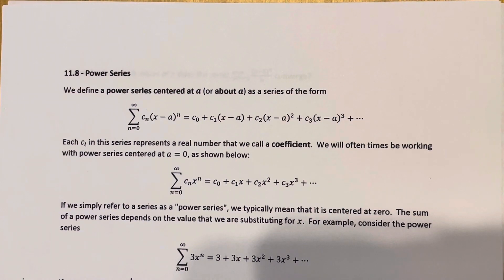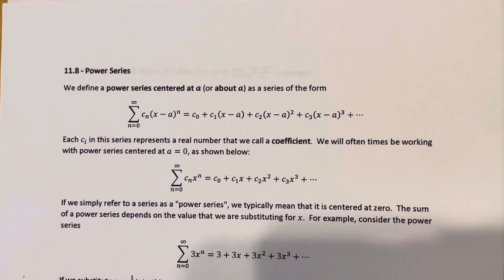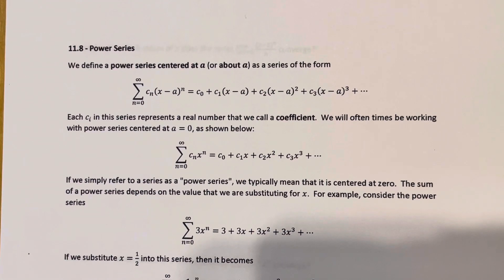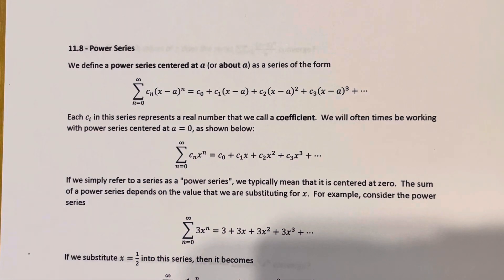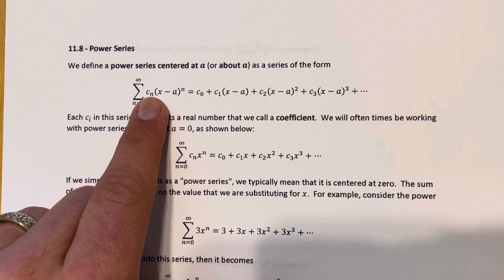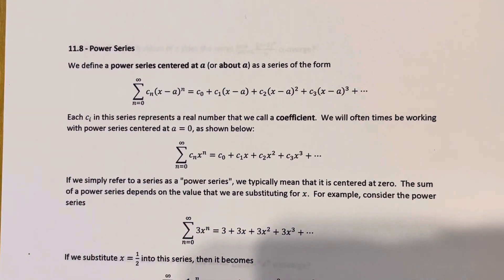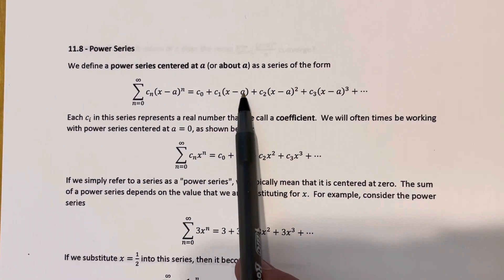We're in section 11.8, talking about power series. So up until this point, every time we've been dealing with a series, the terms of that series have all been constants — constants determined by some function or formula involving n. Starting with this section and throughout the rest of this chapter, we're going to be looking at series where a variable appears inside the terms. We're looking at a specific type of series called a power series, and here's a general definition.